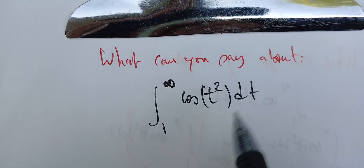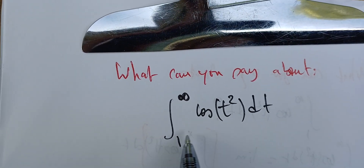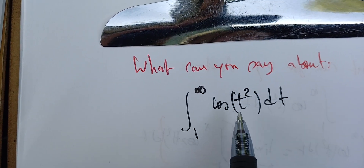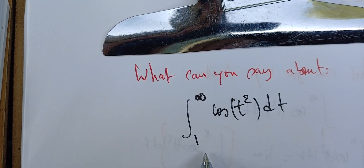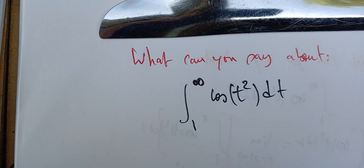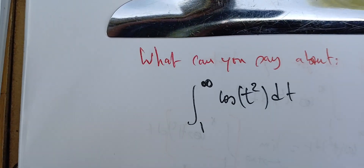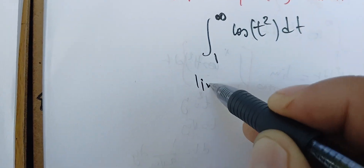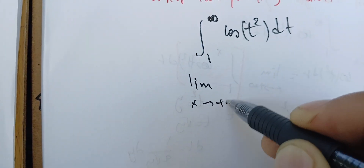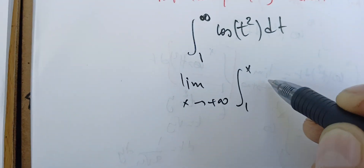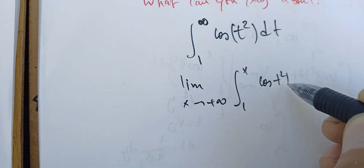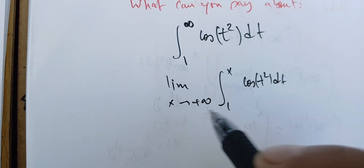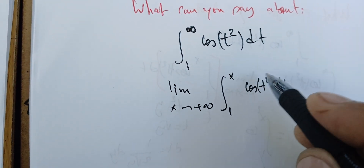In this video we're going to study this historic integral: the integral of cosine of t squared between 1 and infinity. To study this one, we're going to find the following limit — the limit as x goes to infinity of this integral between 1 and x.